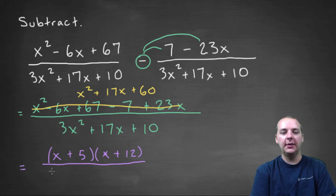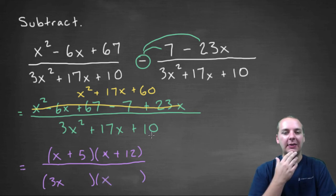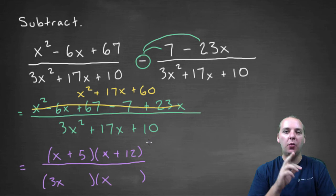Alright, and then the denominator, let's see if he factors as well. So you would get a 3x for the first factor, and an x for the second factor. And then for factors of 10, it's going to either have to be a 1 and a 10, or a 2 and a 5.